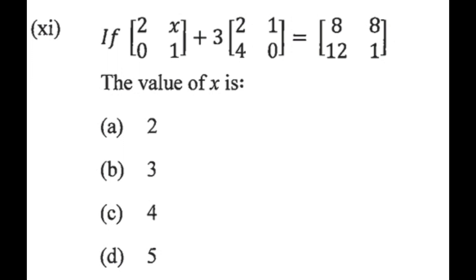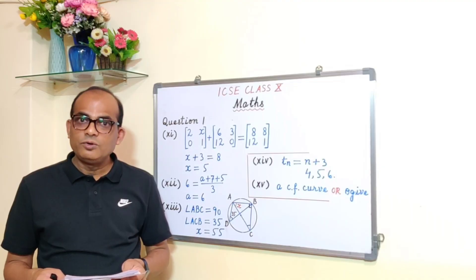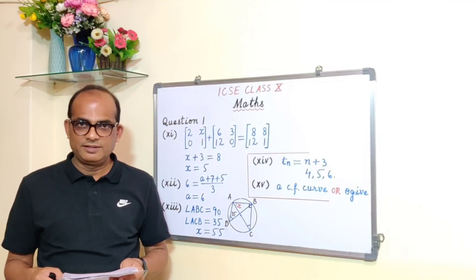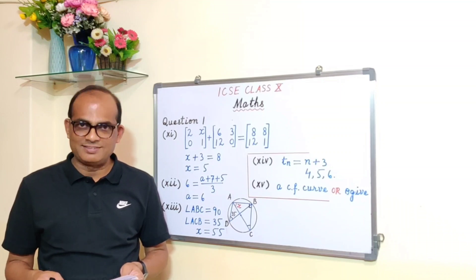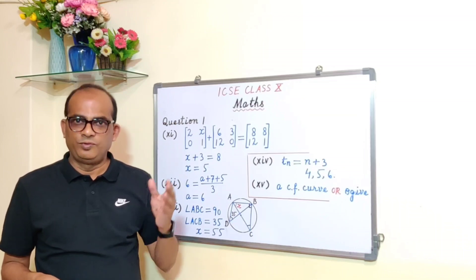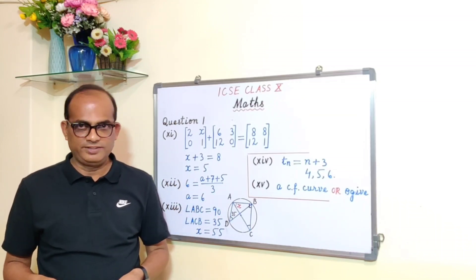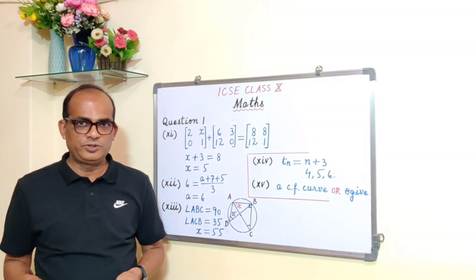Sub question 11 is from matrices. If 2 times the matrix [X, 0; 1] plus 3 times the matrix [2, 1; 4, 0] is equal to [8, 8; 12, 1], then we have to find out the value of X. Four options are given and we will solve it to find the correct one.